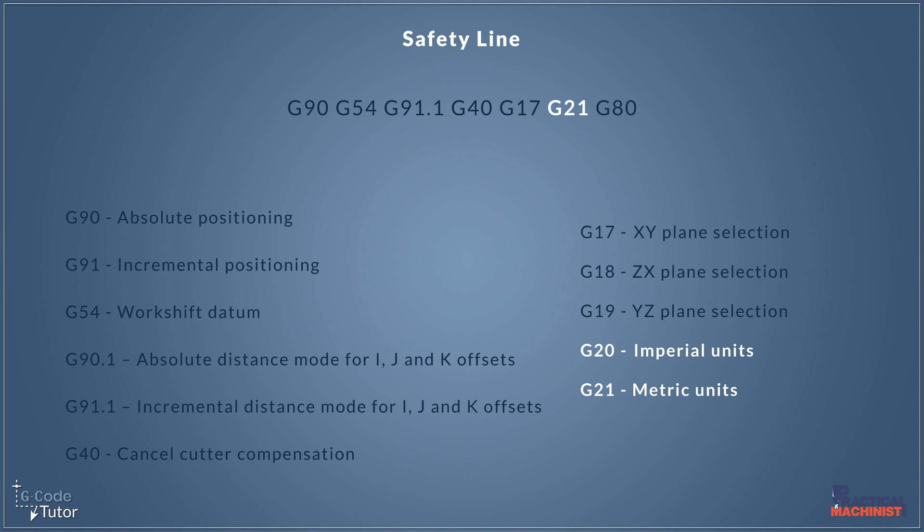I've added G21 here. G21 selects between our metric or imperial units. If our program is in metric I would add G21, or if it was imperial I would add G20. It's very rare that we would switch between imperial and metric throughout a program as we're running it, but I always like to add this here anyway. There's no harm in reminding the machine that we're in metric units every time it reads a new sequence.